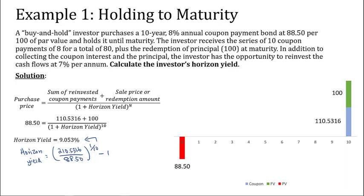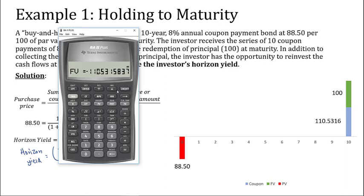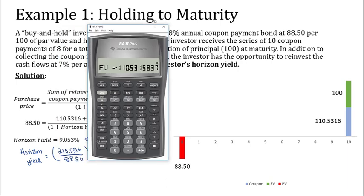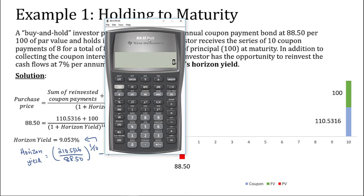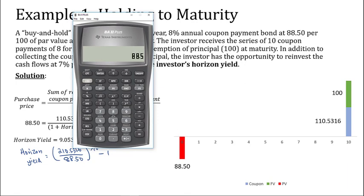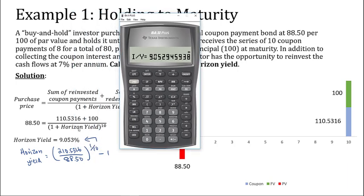We can also use the financial calculator. Clear the screen with 2nd FV. N = 10 (holding period), PV = -88.50 (purchase price, entered as negative), FV = 210.5316 (our future value), PMT = 0 (no interim cash flows). Compute IY and we get 9.0529%, which is 9.053% — our horizon yield. That is the return for the investor if he holds the bond until maturity, assuming coupons are reinvested at 7% per annum.